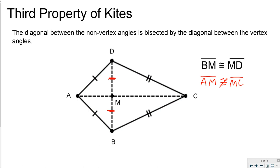The third property of kites says that the diagonal that is between the non-vertex angles, so the diagonal that separates angle B from angle D, is bisected cut in half by the other longer diagonal. And this means that segment BM is congruent to segment MD, but it does not mean that AM is congruent to MC.